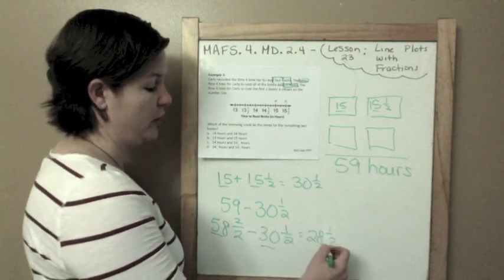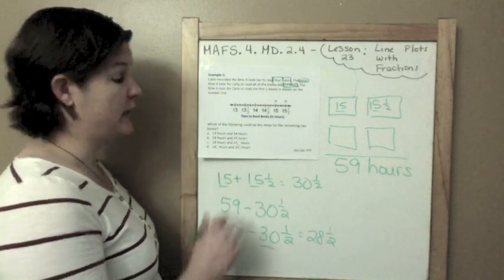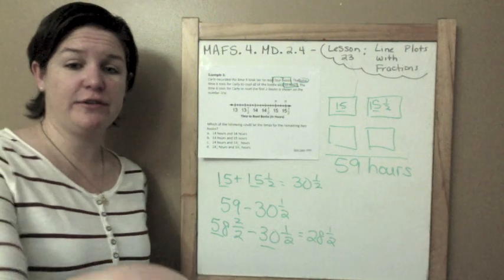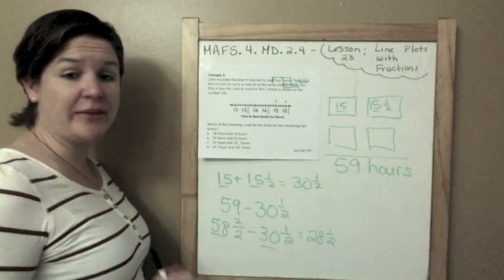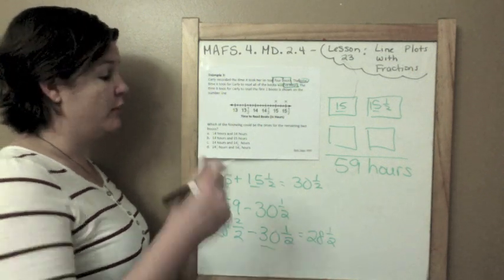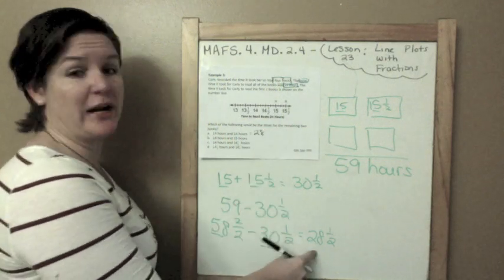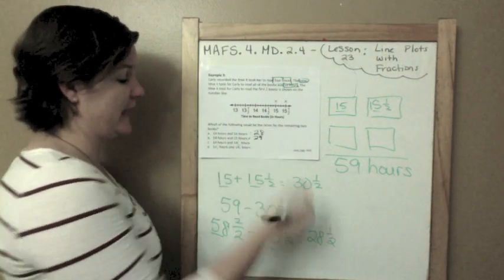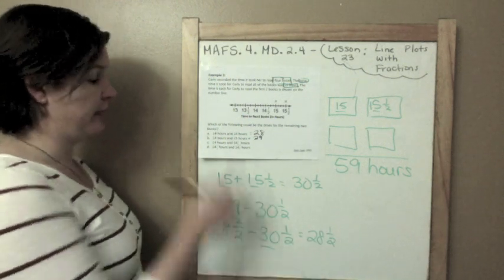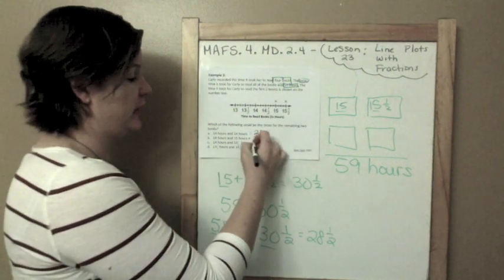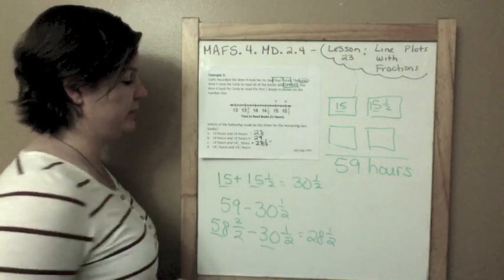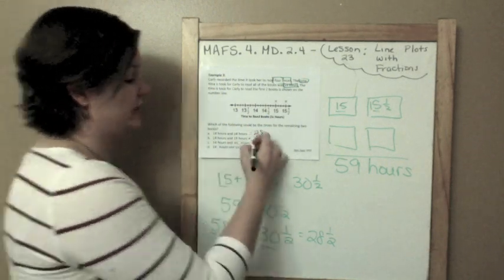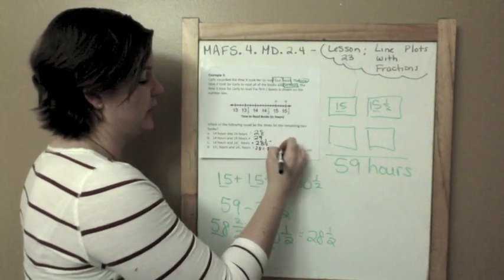So let's look at A. A says 14 hours and 14 hours. 14 plus 14 equals 28 hours, but I need to find 28 and a half hours. 14 plus 15 equals 29, close but I need to find 28 and a half. Almost there. 14 and 14 and a half equals 28 and a half, that's looking like the right one. 14 and a half plus 14 and a half, well 14 plus 14 is 28, half plus a half equals 1, so 28 plus 1 equals 29. The only correct one would be C.